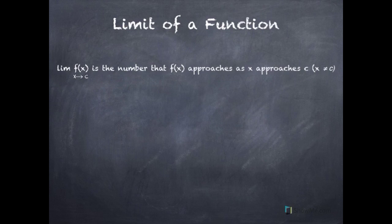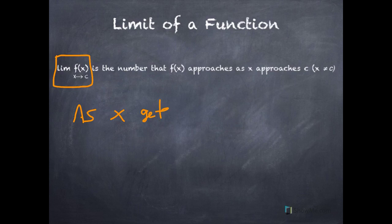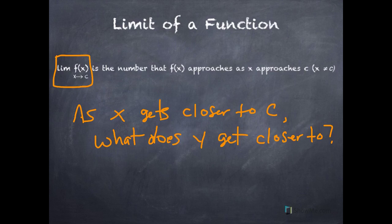So what does that mean? The limit of f(x) as x approaches c means this: as x gets closer to c, what does y get closer to? So when you see a limit and it doesn't tell you what it's equal to, that's what it's asking — what is y getting closer to as x is getting closer to c?